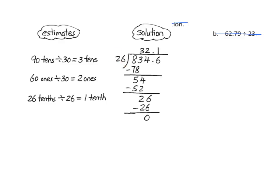We take our divisor and we round it to 30. We look at our 83, and we're looking for a compatible number with 30, and we get 90. So we make an estimate of 3 tens, and note that we record that quotient in the tens place.